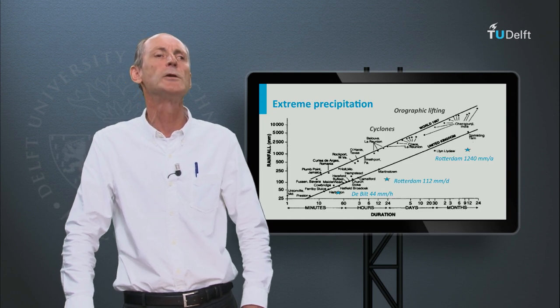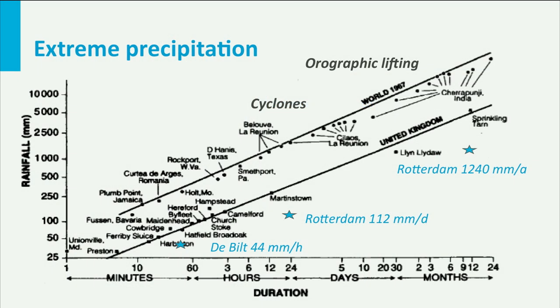It is fun to look at the world records of precipitation. Here we plot the maximum depths of precipitation recorded in the world as a function of their duration. We see that the orographic lifting in the foothills of the Himalayas, under the influence of the monsoons, triggers the highest amounts of long-duration rainfall — a maximum of about 20 meters per year in Cherrapunji. The tropical cyclones cause the largest amounts on a daily timescale. In La Réunion in the Indian Ocean, we recorded about 2 meters per day.